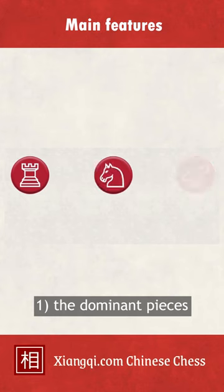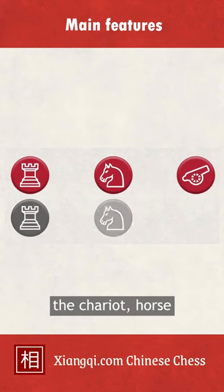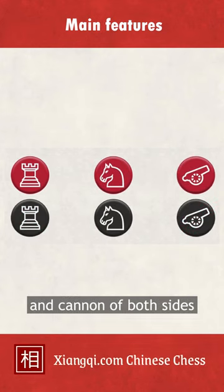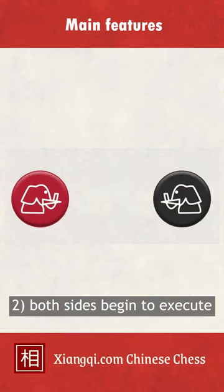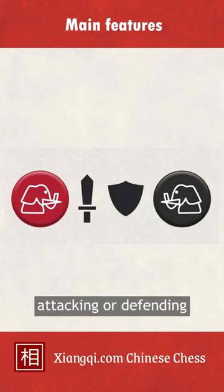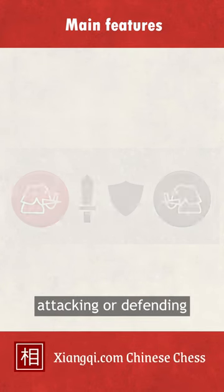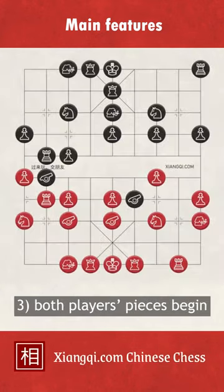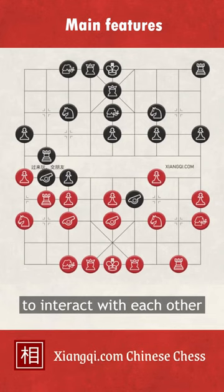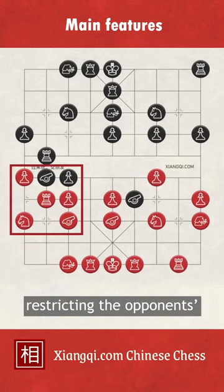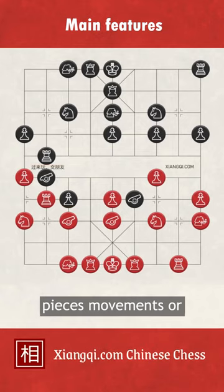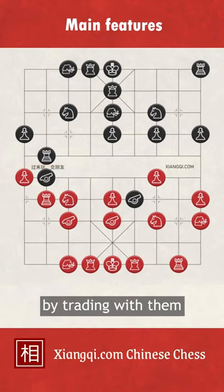1. The dominant pieces of both sides have been developed. 2. Both sides begin to execute on their plans of attacking or defending. 3. Both players' pieces begin to interact with each other, either by creating tension and restricting the opponent's movements, or by trading with them.